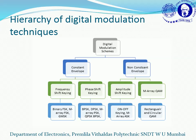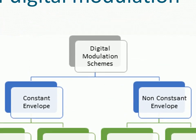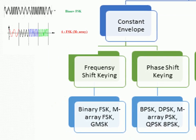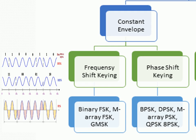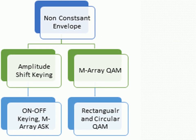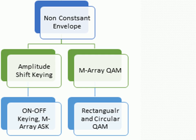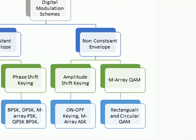The hierarchy of digital modulation techniques: digital modulations are classified according to amplitude as either constant envelope (fixed amplitude) or non-constant envelope (variable amplitude). Under constant envelope, we have FSK and PSK. FSK includes binary FSK, M-ary FSK, and GMSK. PSK includes binary PSK, differential PSK, M-ary PSK, quadrature PSK, and 8-PSK. Under non-constant envelope, we have ASK and quadrature amplitude modulation (QAM), with on-off keying, M-ary ASK, and rectangular or circular QAM.